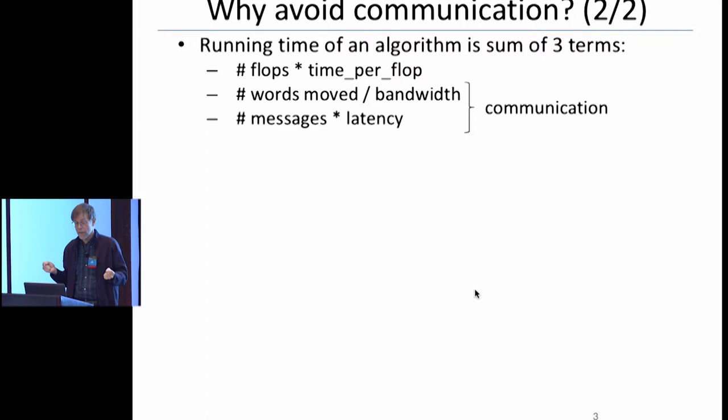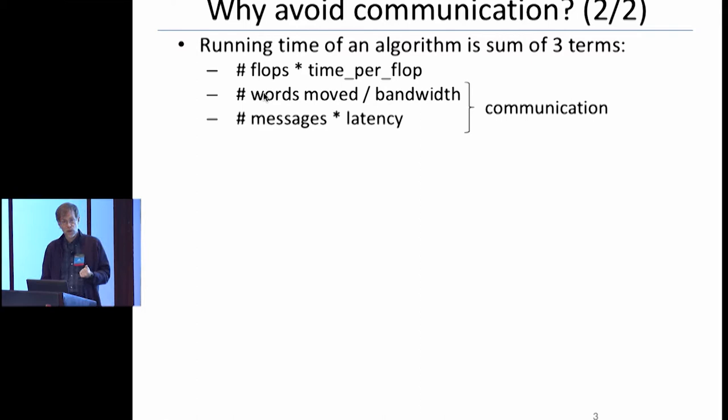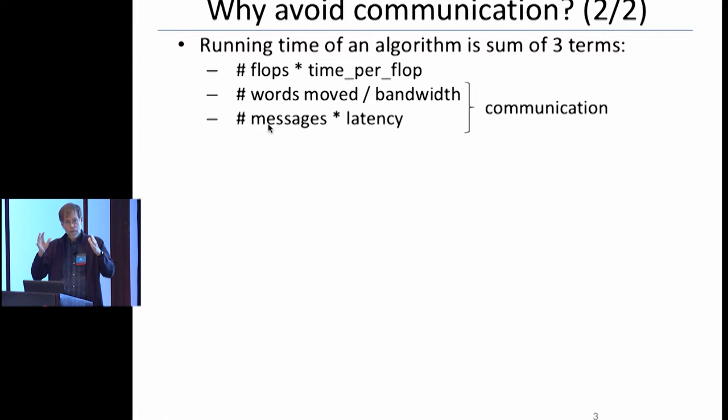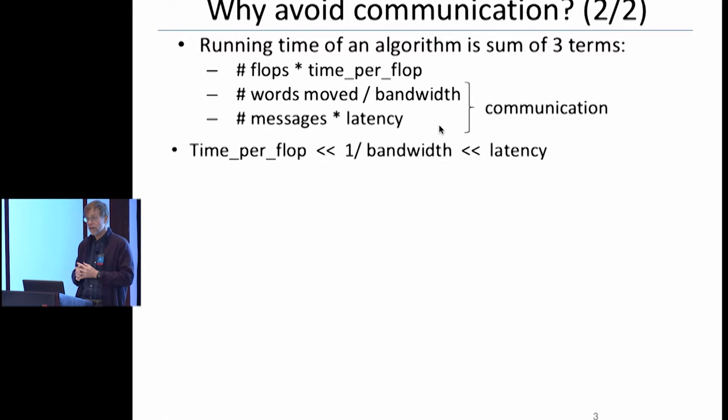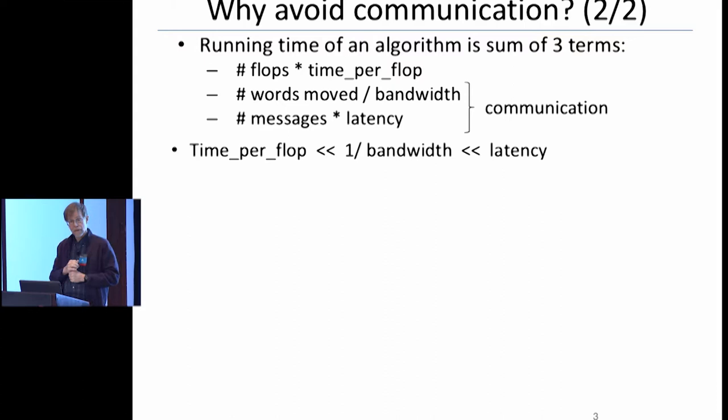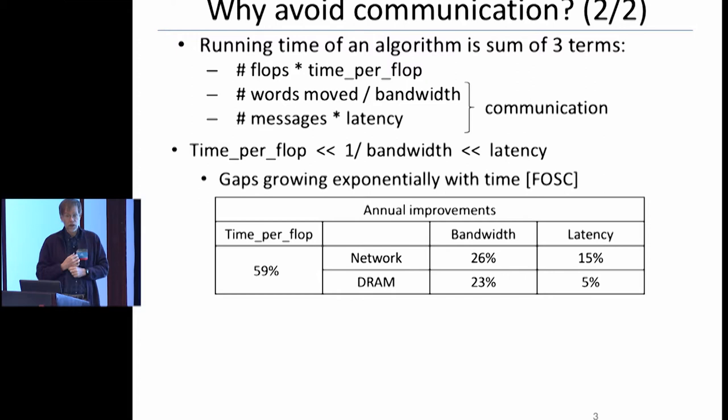Here's the formal model I'll use to say whether an algorithm is optimal or not. I'll count how many flops it does, how many words it moves over any one of those wires, and the number of messages — the number of packets of contiguous words sent. Those depend on my algorithm. The hardware parameters are: time per flop, time per word moved (reciprocal bandwidth), and time per message (latency). The last two are the communication, and as this audience knows, those three hardware parameters are orders of magnitude apart.